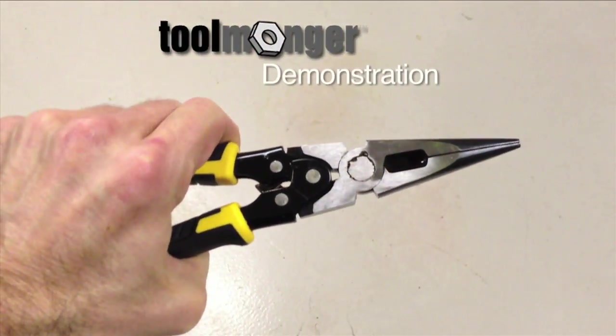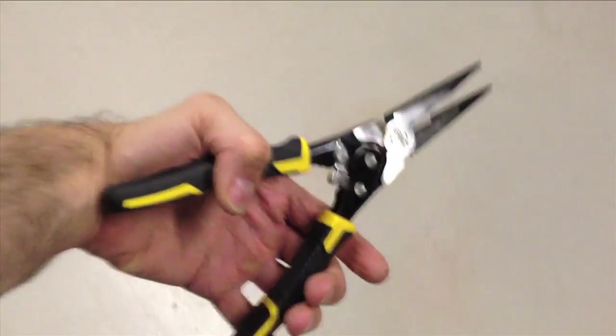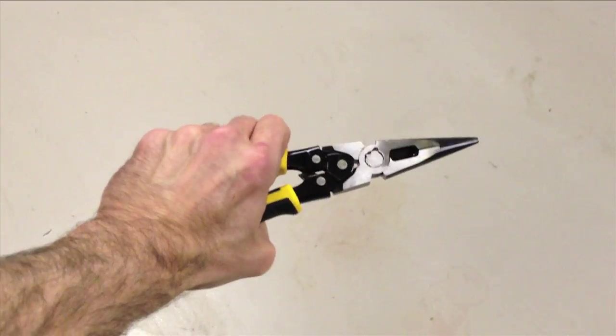Hey, this is Chuck. These are the DeWalt Compound Action pliers. These are the needle-nose version. I just grabbed my camera phone to show you how they work because it's kind of hard to describe.